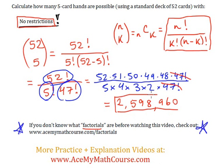There are 2,598,960 possible 5-card hands if you're choosing the cards from a standard deck of 52 cards, and that's it.